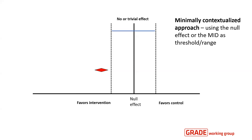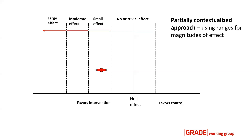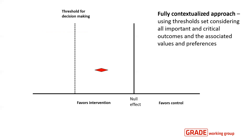Alternatively, using thresholds for a minimally important difference, we would rate our certainty that we have an effect larger than trivial. Using the partially contextualized approach, we also set thresholds for small, moderate, and large effects, with ranges depending on the importance placed on this outcome — and in this example, we would rate our certainty that we have a small effect. Using the fully contextualized approach, we set a decision-making threshold considering all other important and critical outcomes, and in this example, we would rate our certainty that the effect is not large enough to recommend the intervention.